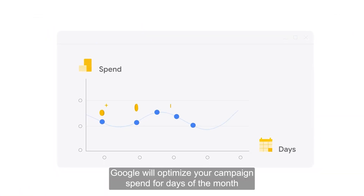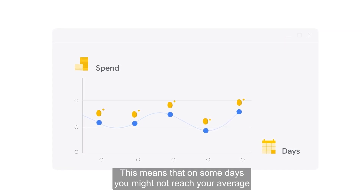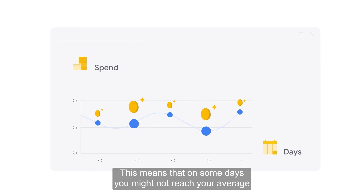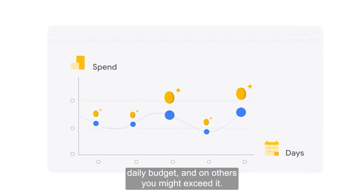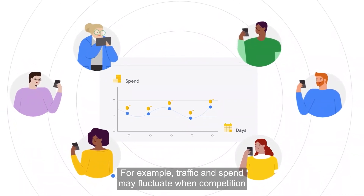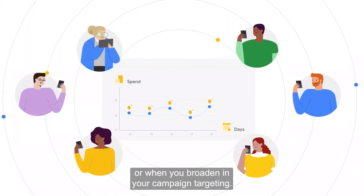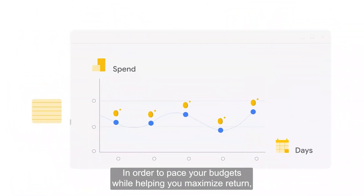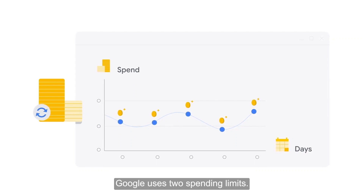Google will optimize your campaign spend for days of the month when you're more likely to get clicks and conversions. This means that on some days you might not reach your average daily budget and on others you might exceed it. Traffic and spend may fluctuate when competition and consumer demand increases or when you broaden your campaign targeting. In order to pace your budgets while helping you maximize return, Google uses two spending limits.